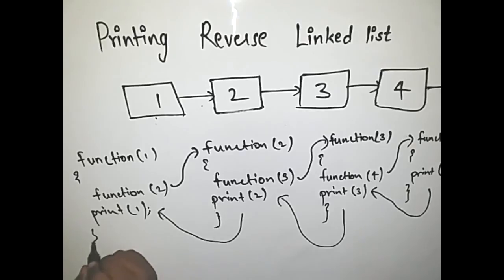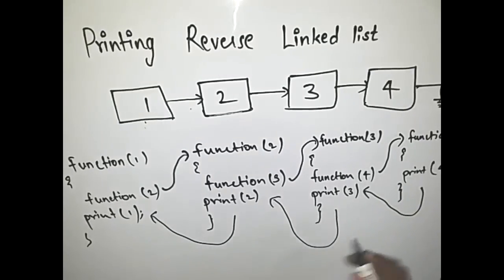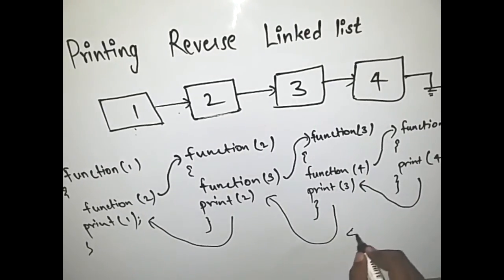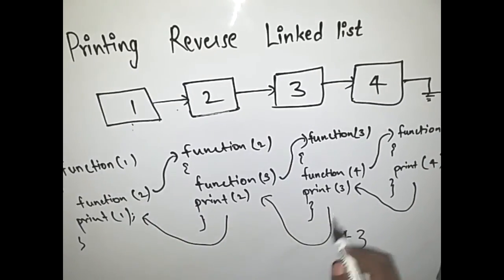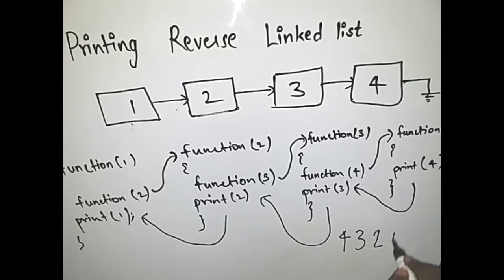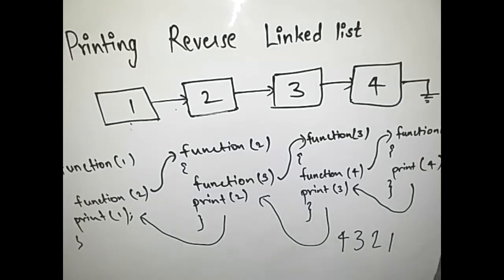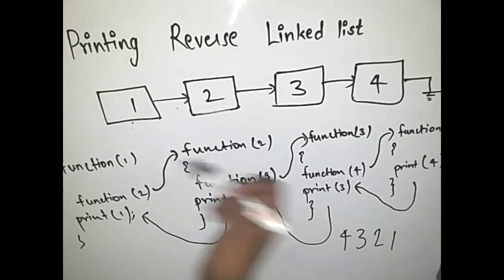So accordingly what happens is first we print this so 4 is printed at first, then we print this, then 3 is printed, then we print 2, and then we print 1. So this is how you use recursion to print the reverse of a given linked list.